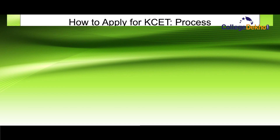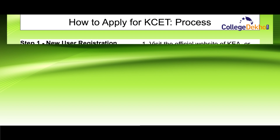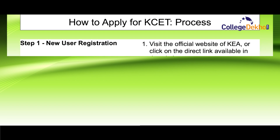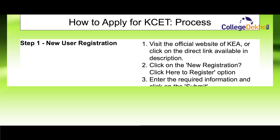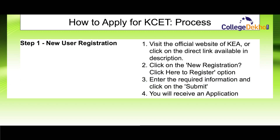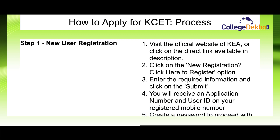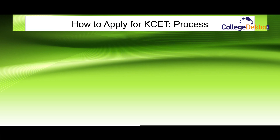The first step is new user registration. Visit the official website of KEA or click on the direct link available in the video description. Click on the new registration option, enter the required information, and click on submit. After submission, you will receive an application number and user ID on your registered mobile number. Using that user ID, you have to create a password to proceed with the form filling.